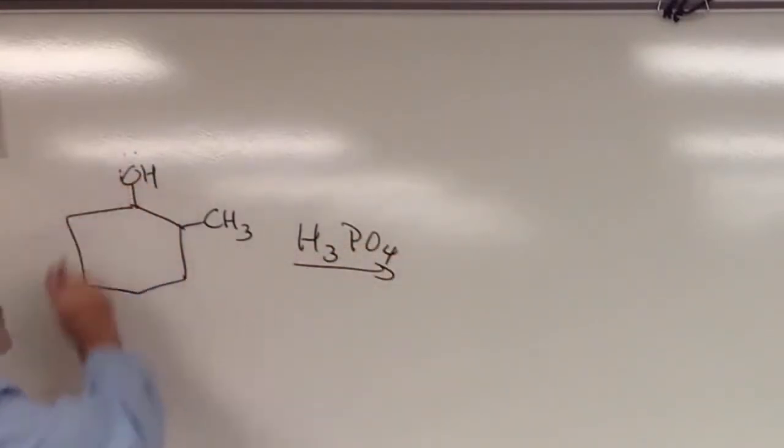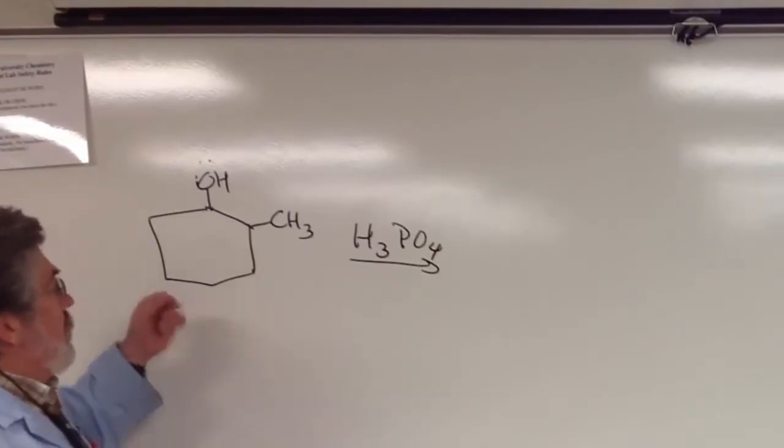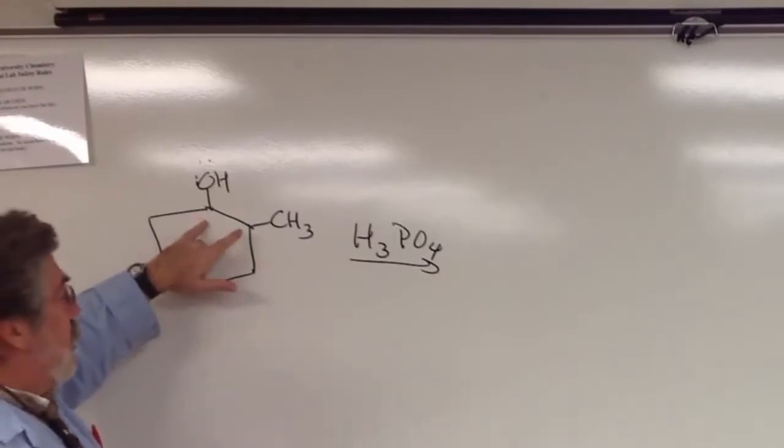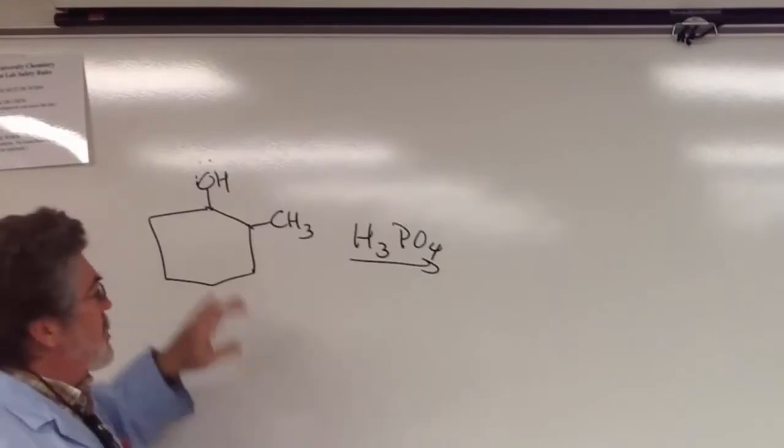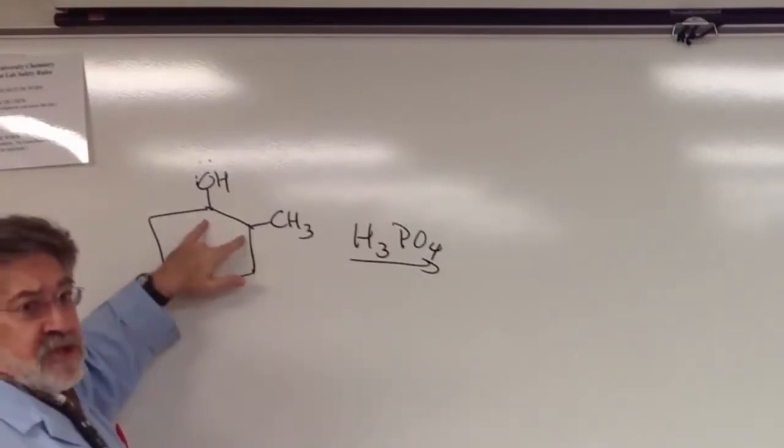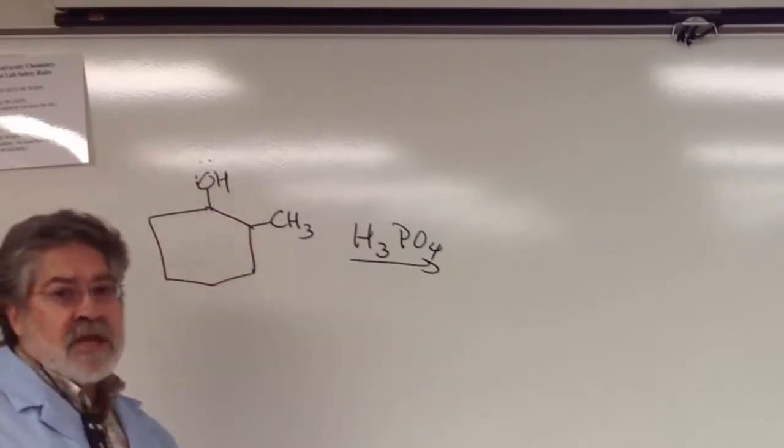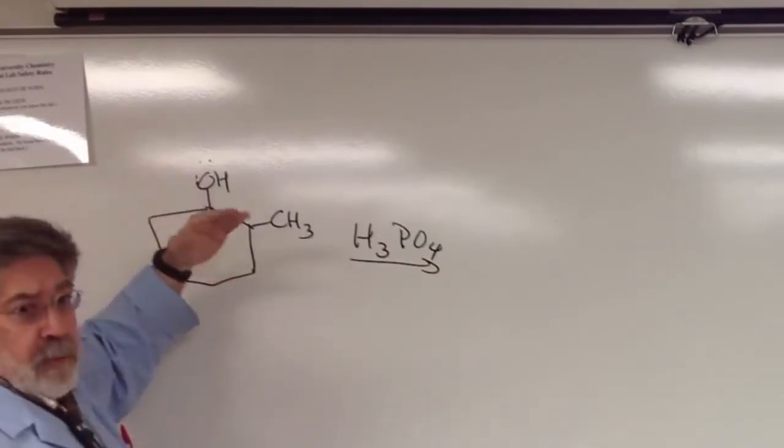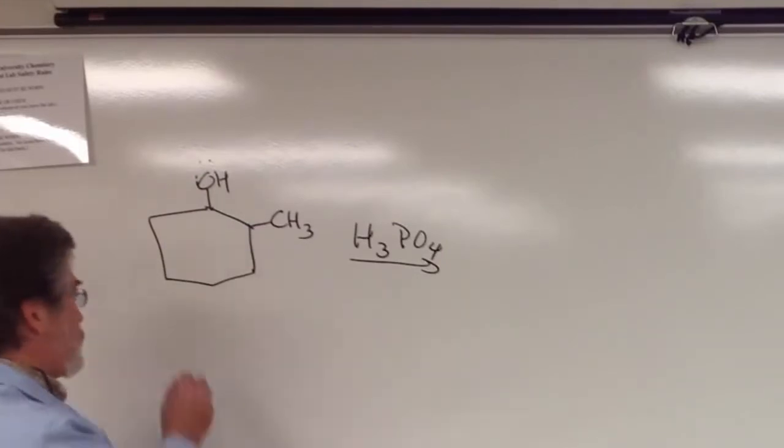A couple things to think about with regard to the 2-methylcyclohexanol. First of all, realize you have two groups attached to a cyclohexane ring in a 1-2 relative position. Remember from what we've talked about in class, this means that both these groups could be on the same side of the ring, that is, either both of them pointed up or pointed down, in which case we call it the cis isomer.